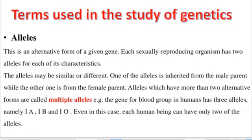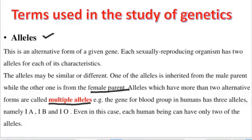An allele is just an alternative form of a gene. Each allele is inherited through sexual reproduction — one from the male parent and one from the female parent. These alleles may be similar or they may be different. Alleles that have more than two alternative forms are called multiple alleles. An example is the gene for blood groups, which falls under multiple alleles, meaning it has more than two alternative forms of a gene.